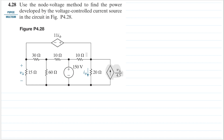We are asked to use the node voltage method. Let's start by setting the bottom-most node as our ground, so V equals zero. We have 150 volts at this node here. This node I'll call Va — using Va for easier pronunciation instead of V-delta — then Vb, and Vc. So we have three unknown nodes.